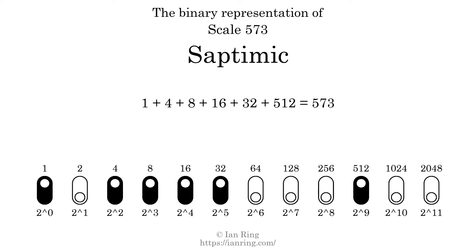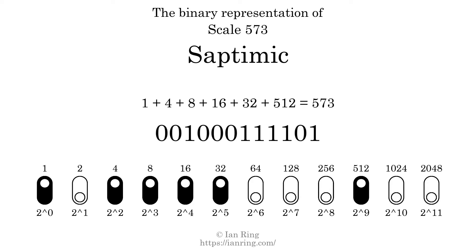The scale number not only enumerates the scale with a unique index, but it also literally describes the tonal content of the scale. The scale number in binary is 0, 0, 1, 0, 0, 0, 0, 0, 1, 1, 1, 1, 0, 1.